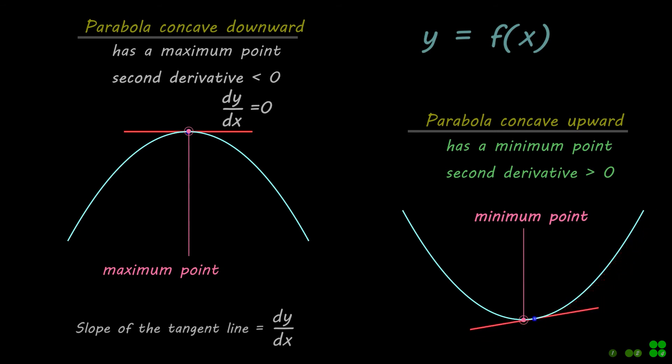It is interesting to note, if the second derivative is negative at a point, the graph is concave downward. If the second derivative is negative at a critical point, then the critical point is a local maximum.